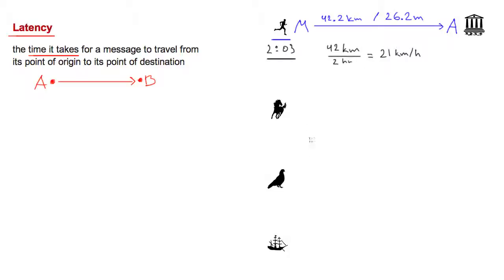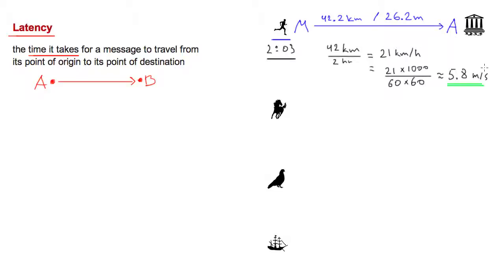In our other examples we'll want to use meters per second, so I'll show you how to make this conversion. There are 1,000 meters in each kilometer, so we multiply that out and divide by the number of seconds in an hour. If you do this math, it works out to approximately 5.8 meters per second — a very quick pace. This tells us the message travels at 5.8 meters per second, but the total latency to deliver the message from the Battle of Marathon to Athens is roughly two hours.